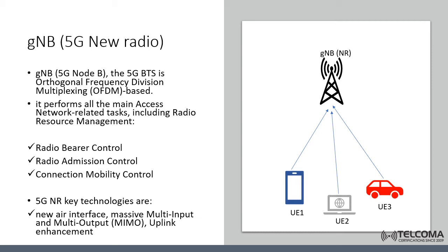The 5G new radio has introduced new technologies like a new air interface, massive MIMO (multi-input multi-output), and uplink enhancements. These new technologies are introduced with the target to improve spectrum efficiency, enhance coverage, and suppress interference.